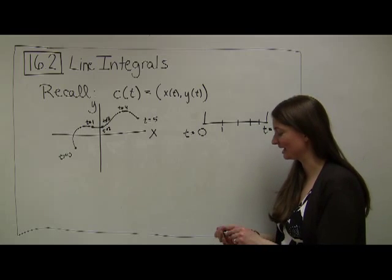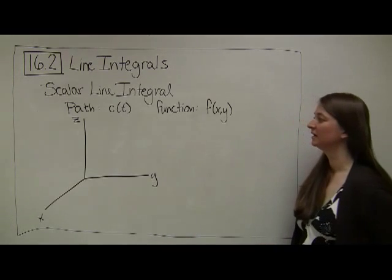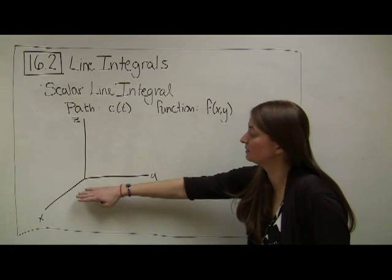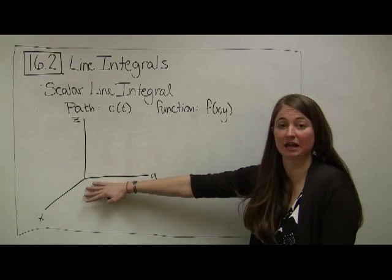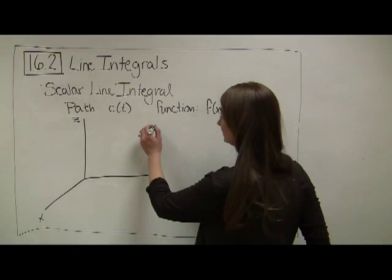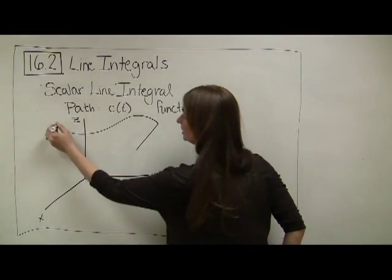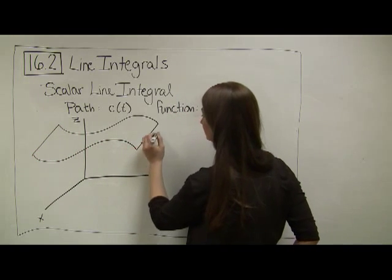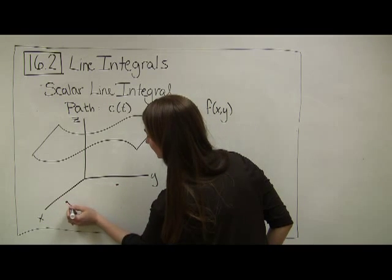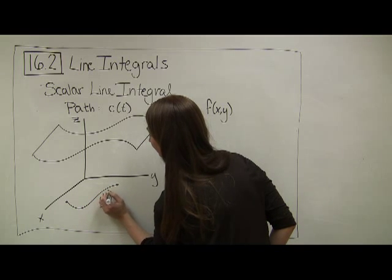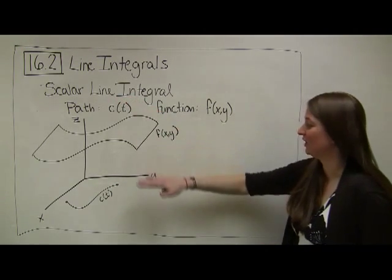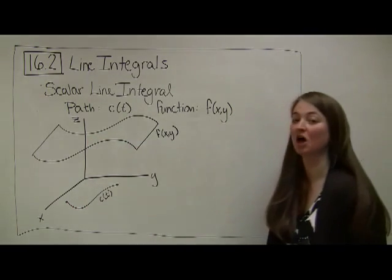This is the basis we need to start talking about scalar line integrals. For a scalar line integral, I need two different pieces: a path — typically represented by a curve down in the xy-plane — and a multivariable function f(x,y). I like to represent multivariable functions as magic carpets. So here's my magic carpet f(x,y), and here's a path c(t) down in the xy-plane. What is a scalar line integral geometrically? We're going to compute the height of the function along this path.